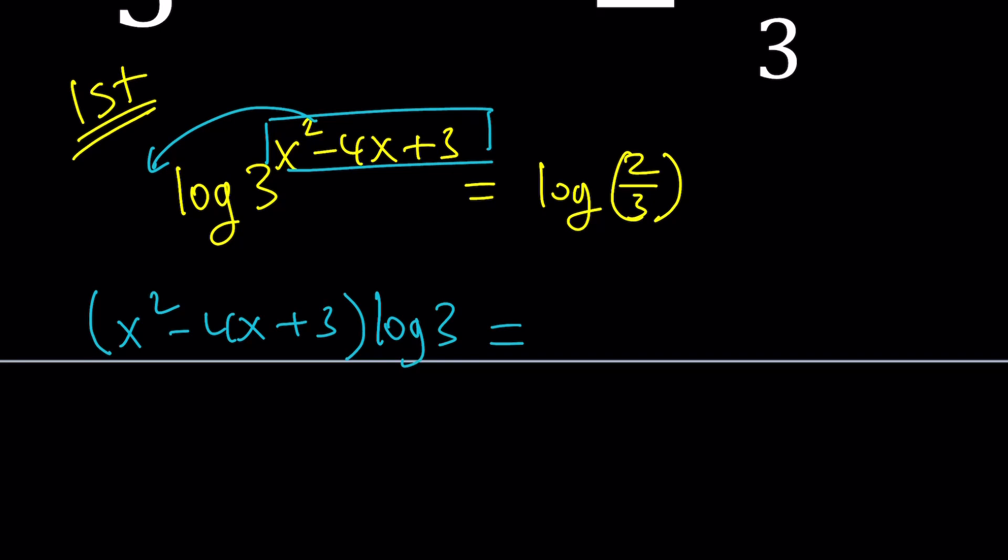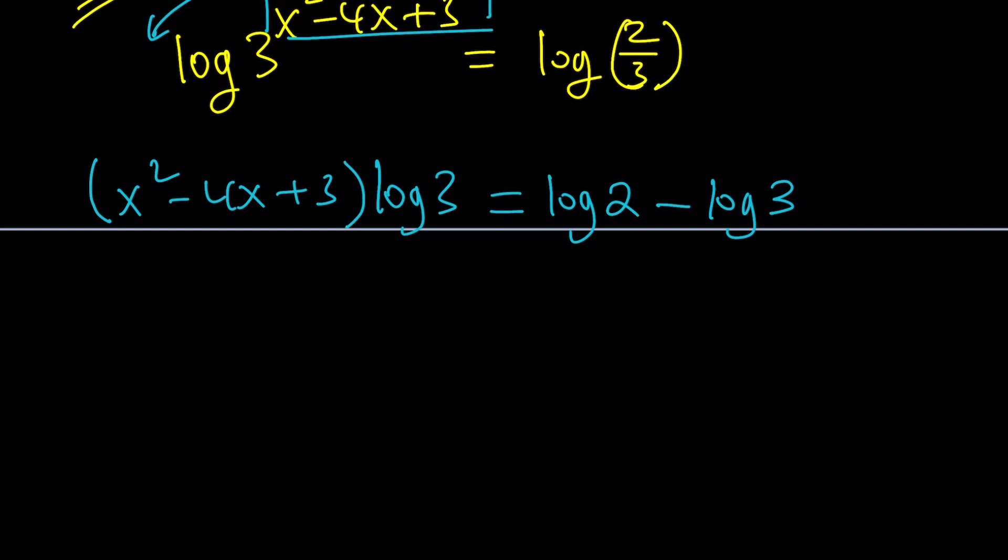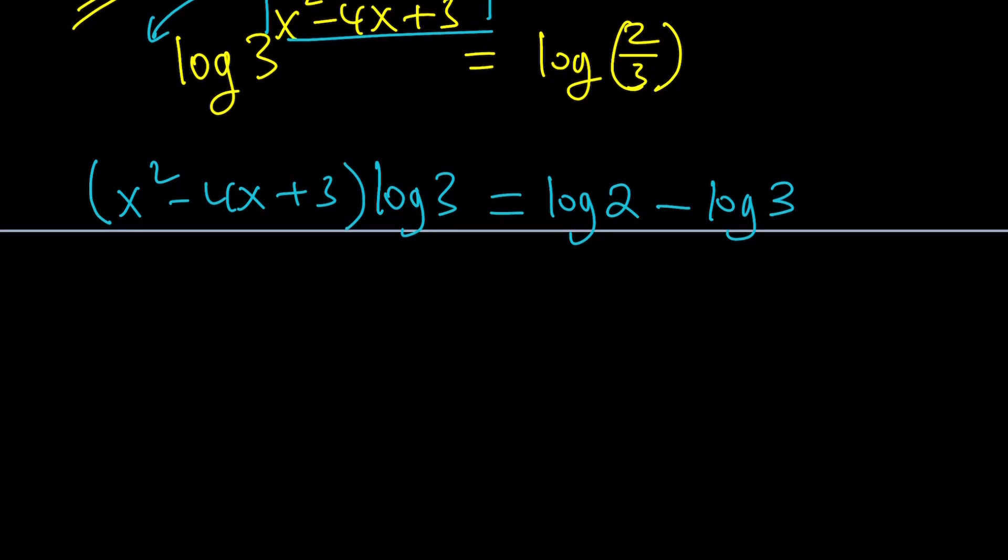And there's another property of logarithms which is called the quotient property. And it just tells you that whenever you have the log of a quotient, you can write it as a difference. Great. Let's go ahead and distribute. Notice that this turned into a quadratic equation. Now, we're going to put everything together.